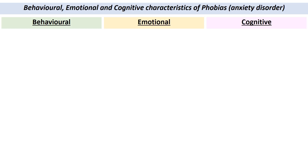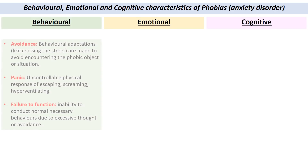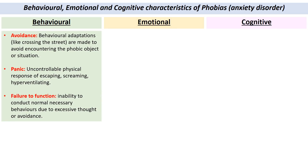First let's look at the behavioural characteristics. One common behaviour would be avoidance. For example, someone with ornithophobia — a phobia of birds — if they see a pigeon land on the street in front of them, they may cross the street to avoid it. This is an avoidance behaviour, adapting their behaviour to avoid the phobic object. People with phobias may also display panic — an uncontrollable physical response at the sudden appearance of the phobic object. They'll scream, hyperventilate, and try to run away and escape.